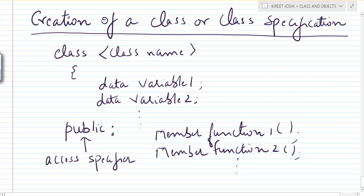We are calling these member functions because each function is a member of this particular class. We can define a member function inside the same class or outside the class. Here we have just declared it. The next step is to complete the class followed by a semicolon, which is required — without it, there will be an error.